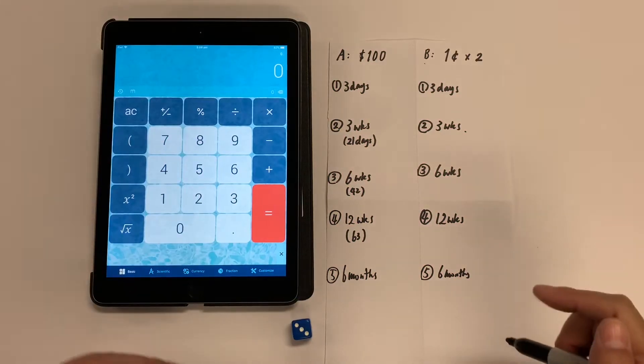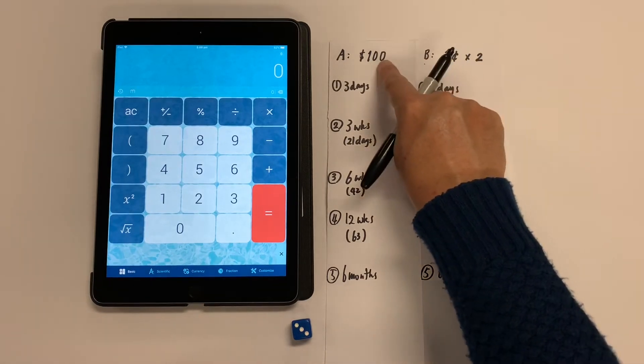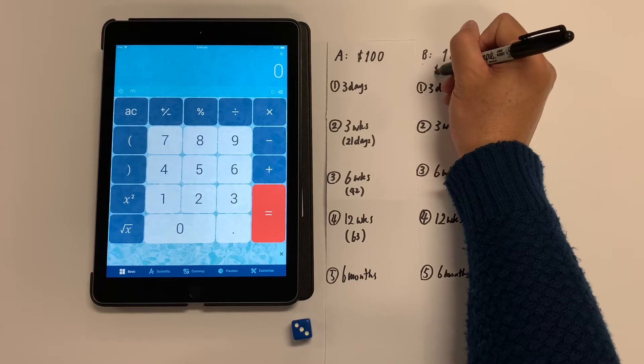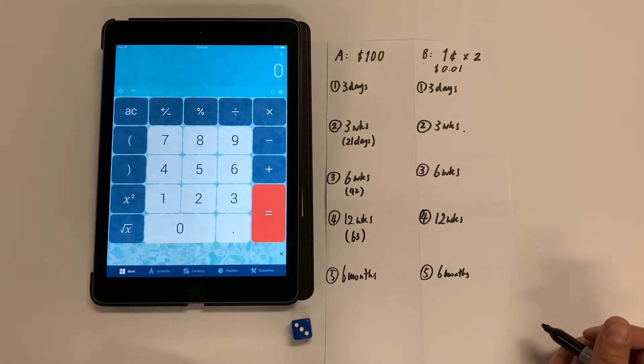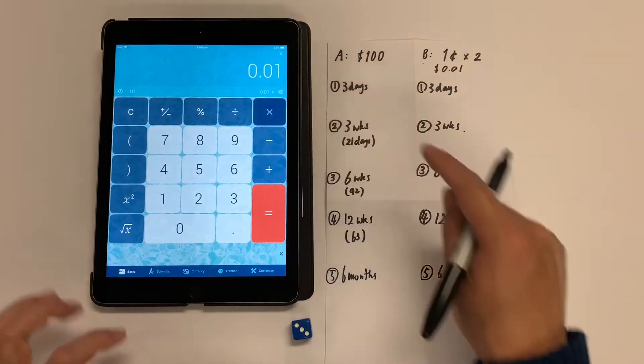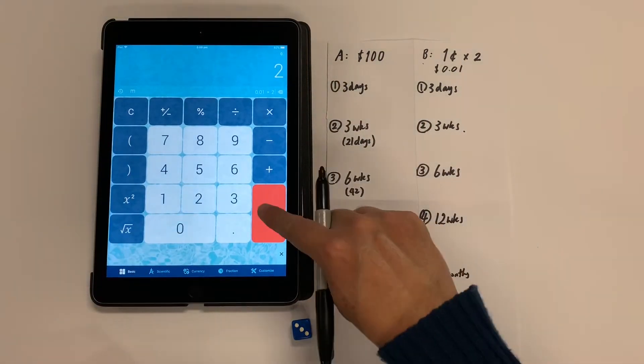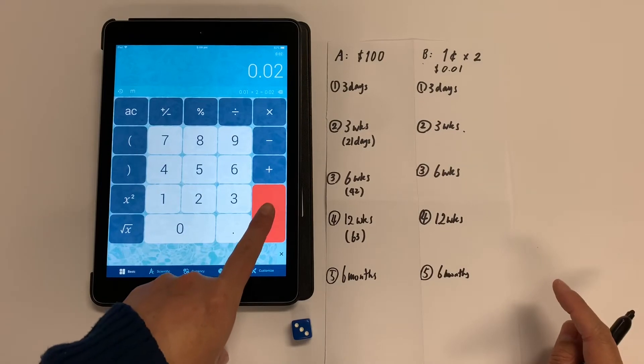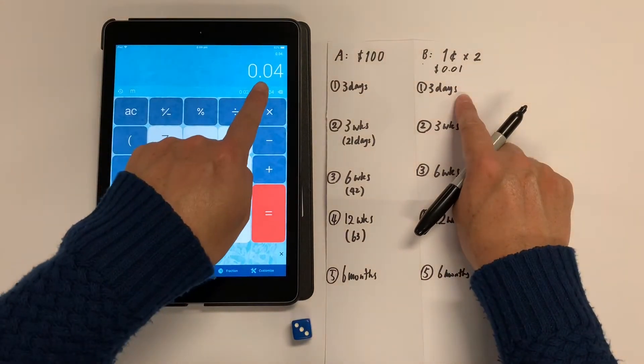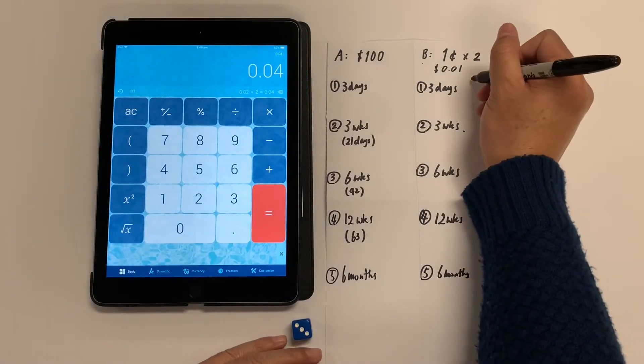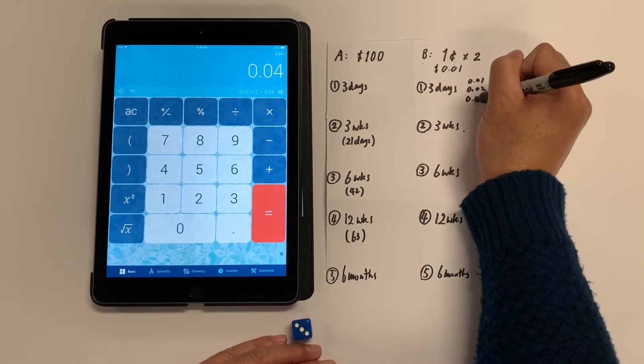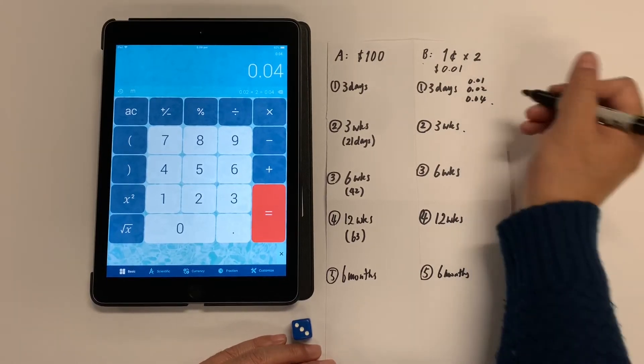So for the calculation's sake, I'm going to convert this to a dollar. So this is 0.01 dollars. One cent. Multiply by, this is the second day. Third day. Third day, he receives four cents. So let's quickly record it. 0.01, 0.02, 0.04. That's the third day.